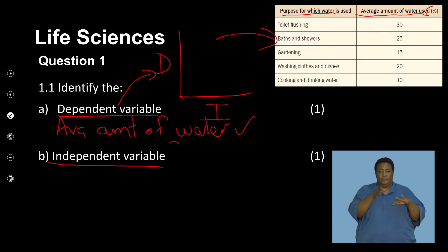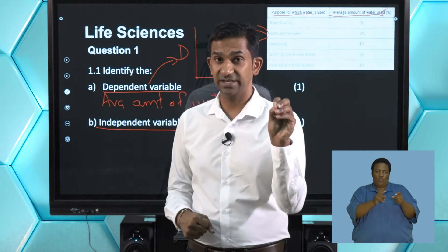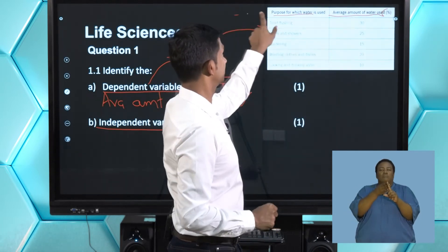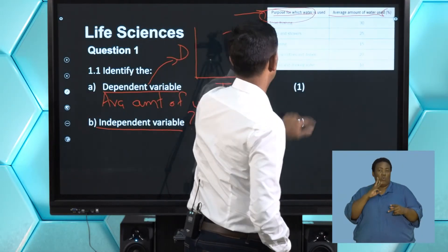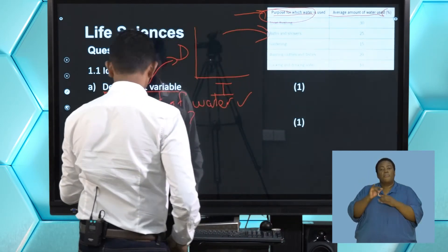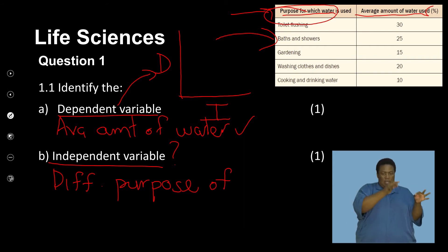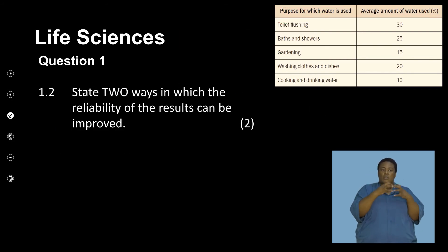The independent variable is what is being investigated — what the learners had control over in terms of finding information. They decided to find out what the purpose of the water being used was, establishing that as the independent variable. The different uses or purposes of water are the independent variable. They went to five households and established what purposes water was being used for, then measured the percentage used.